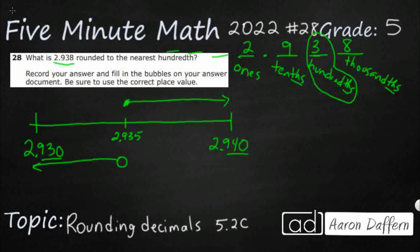So where does this 2 and 938 thousandths land? It's going to land right around here — 2 and 938 thousandths — so it's closer to 2 and 940. That means this is going to move up. But remember, I added that extra zero, and you can always just drop a zero because there's no real need for it. Which means this 2 and 938 thousandths is going to round up to 2 and 94 hundredths, because it's closer to that than it is to 2 and 93 hundredths.